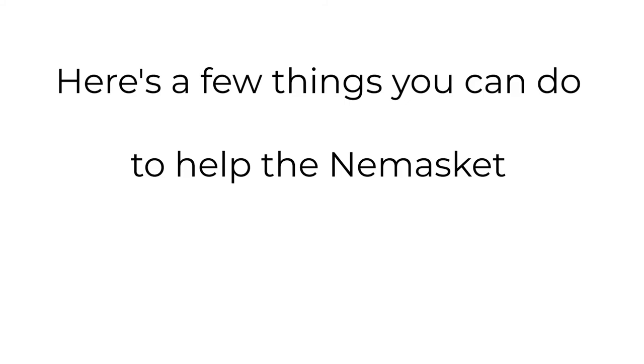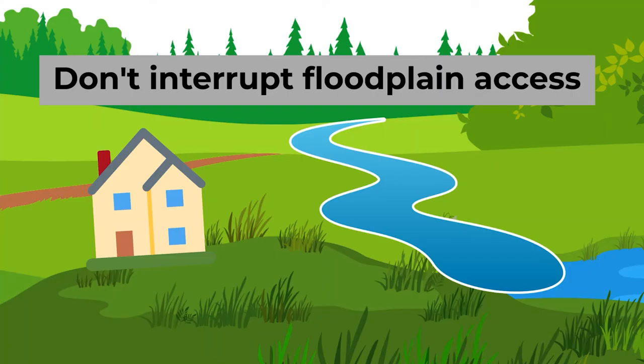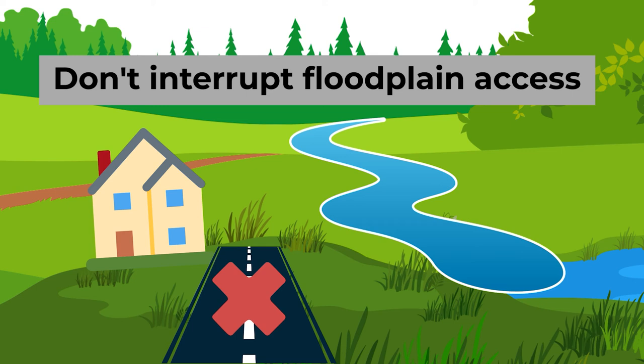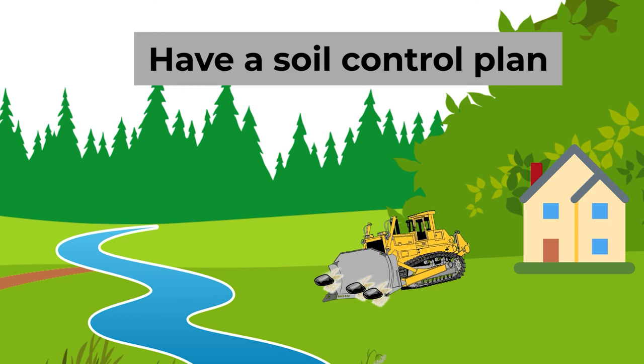Avoid interrupting the river's access to its floodplain by avoiding new construction and impervious surfaces in the floodplain wherever possible. Isolating the river from the floodplain makes intense precipitation events much more devastating. When building or doing construction on your property, have a plan to control sediment — ensure that excess soil is stored, reused, or disposed of properly.